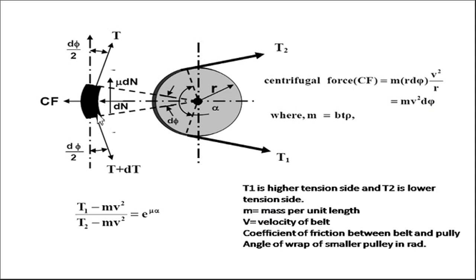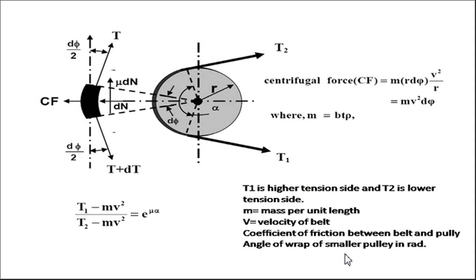If we make the force analysis, there is a tension on the tight side T and a tension T plus dT. If we resolve these forces along the horizontal and vertical directions, we finally get the relationship between the tension on the tight side and the slack side — that is the belt tension ratio. This is equal to: (T1 minus MV squared) upon (T2 minus MV squared) = e raised to mu into alpha, where T1 is the higher tension side, T2 is the lower tension side, M is mass per unit length, V is velocity of belt, mu is coefficient of friction, and alpha is the angle of wrap of the smaller pulley in radians.